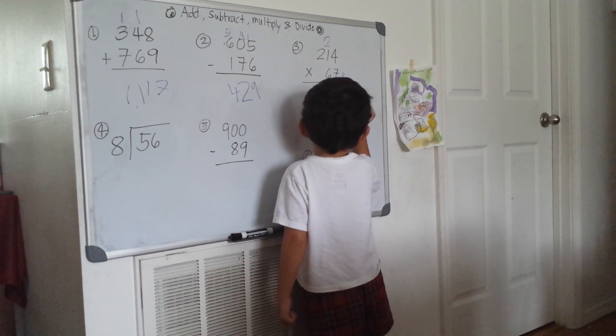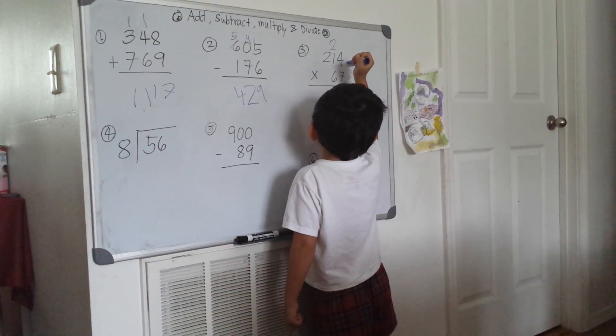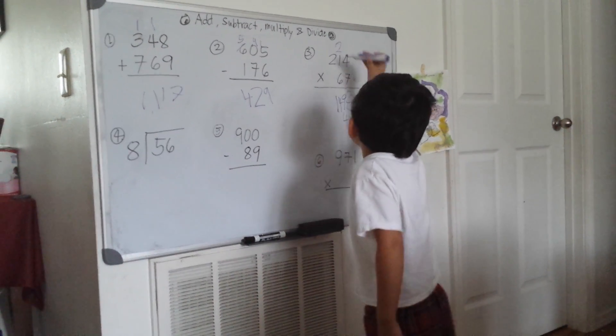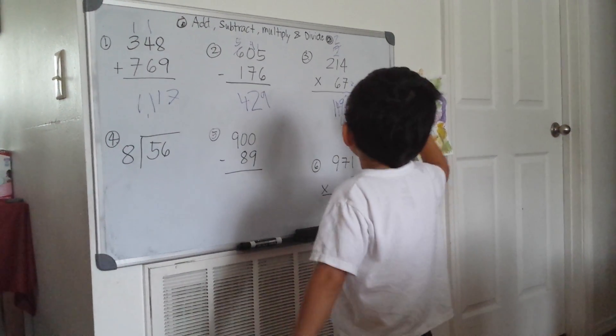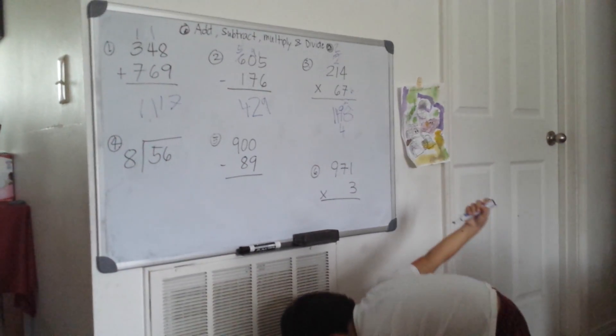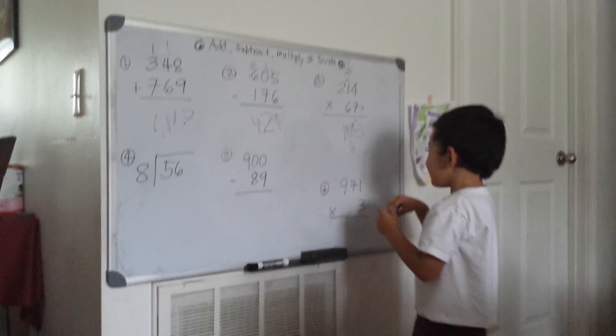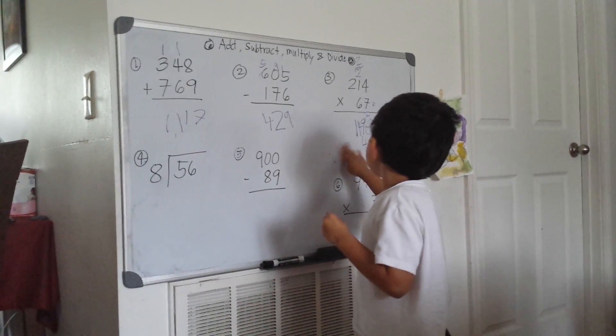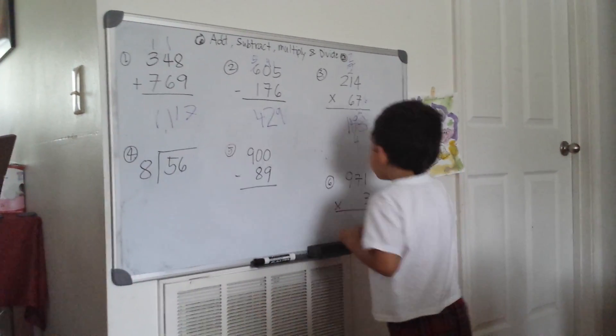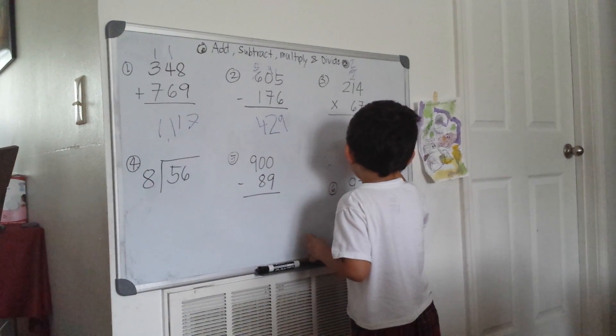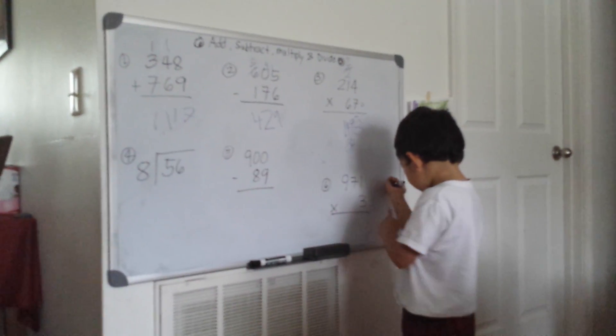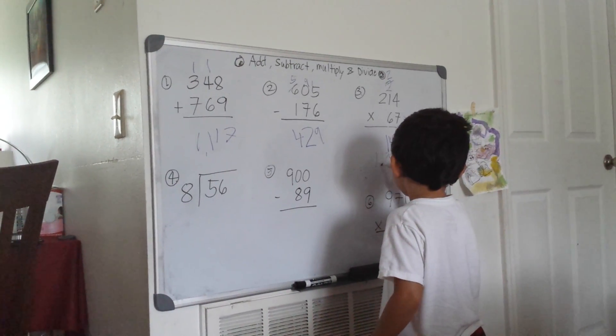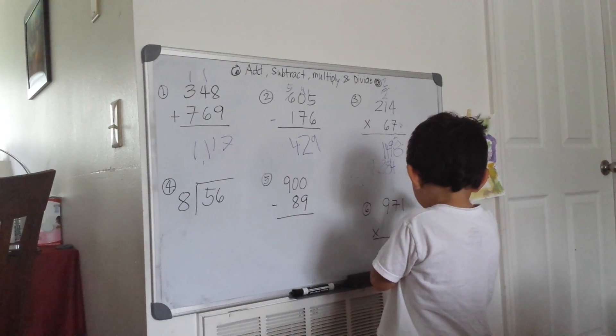Now for the second partial product with 6. 6 times 4 is 24, carry the 2. 6 times 1 is 6, plus 2 is 8. 6 times 2 is 12. The second partial product is 12,840.